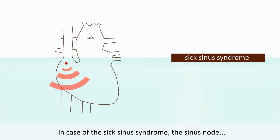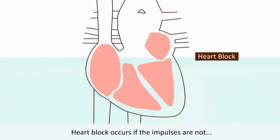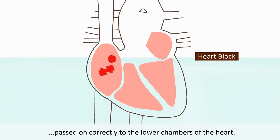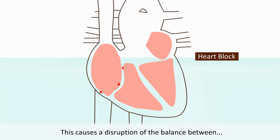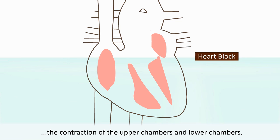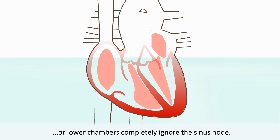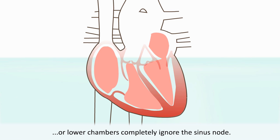In case of the sick sinus syndrome, the sinus node alternates between working too fast and too slow. Heart block occurs if the impulses are not passed on correctly to the lower chambers of the heart. This causes a disruption of the balance between the contraction of the upper chambers and lower chambers. It can also happen that the heart muscle cells of the upper or lower chambers completely ignore the sinus node.